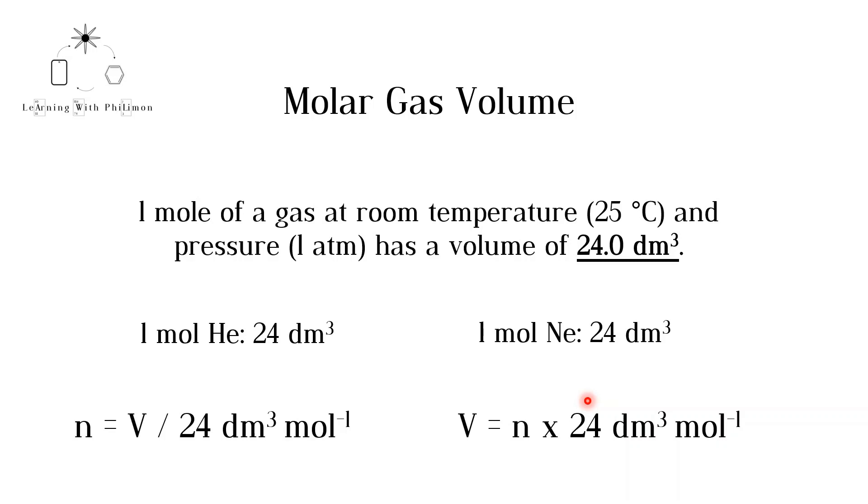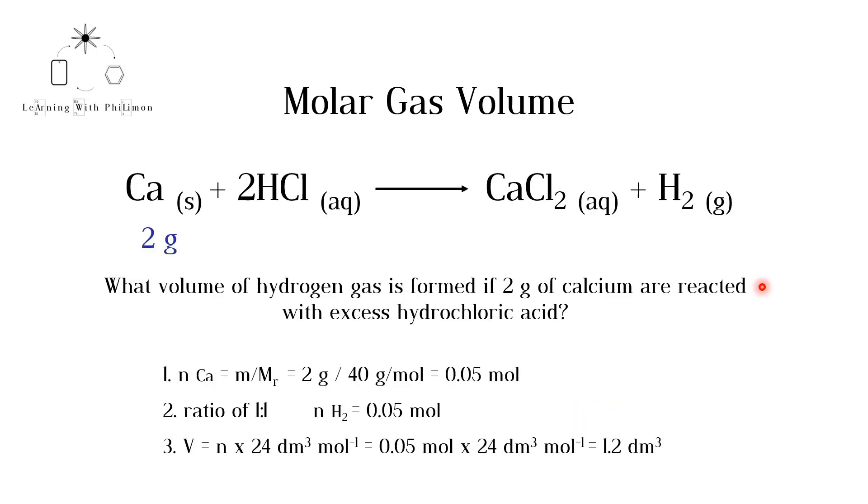Now let's see how we can apply this to chemical equations. A typical question would look like this. What volume of hydrogen gas, H2, is formed if 2 grams of calcium, Ca, are reacted with excess hydrochloric acid, HCl?